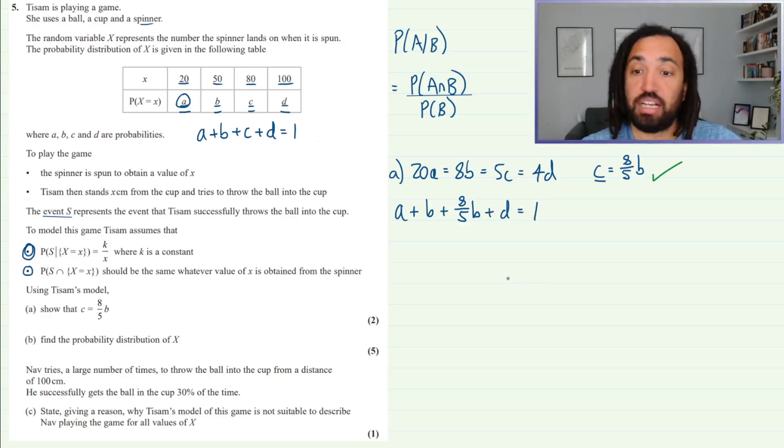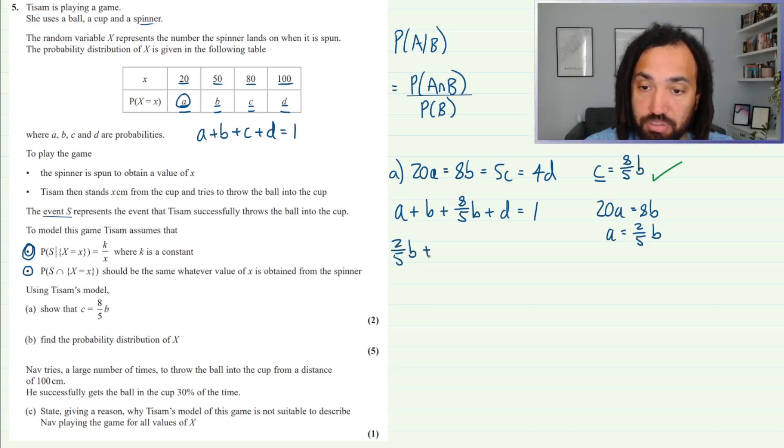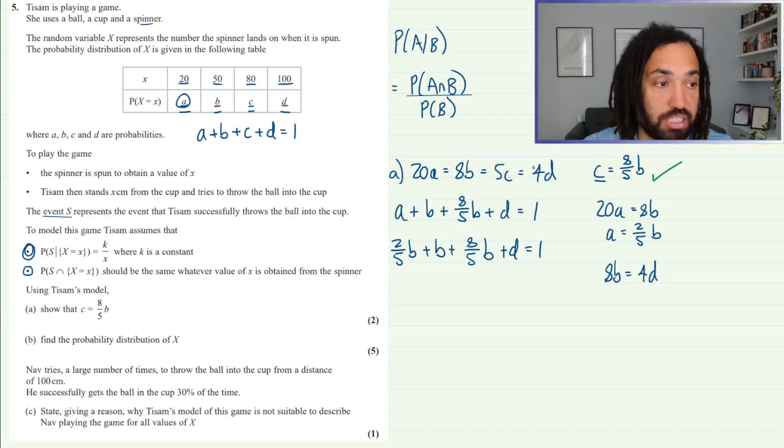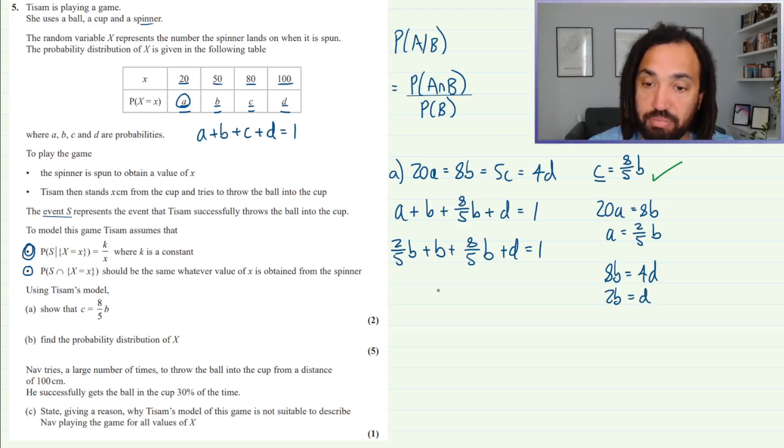So now we need a value of A in terms of B which we can substitute in. Well we know that 20A is equal to 8B, so therefore A, dividing by 20, is going to give me 2 fifths B. Okay great, so we can rewrite this equation as 2 fifths B plus B plus 8 fifths B, and then we just need to replace D which in terms of B we know that 8B is equal to 4D. Again using this equation here, or this set of equations here, we can say that 8B is equal to 4D, which means that 2B is equal to D, so we can sub that in as well.